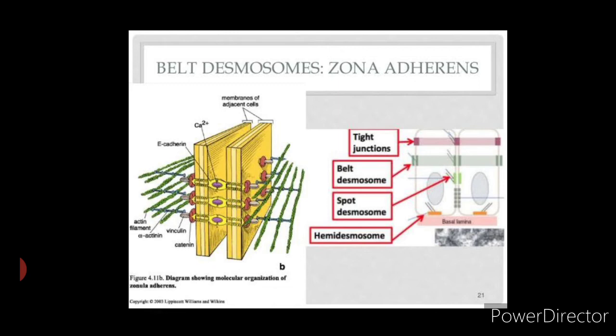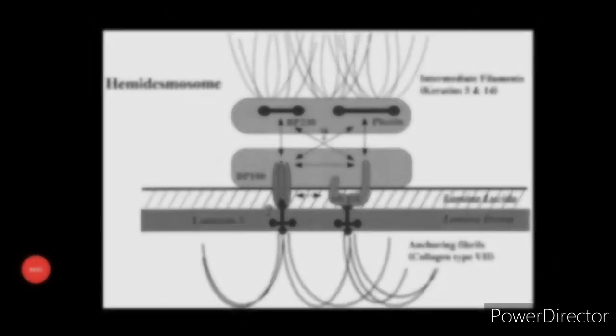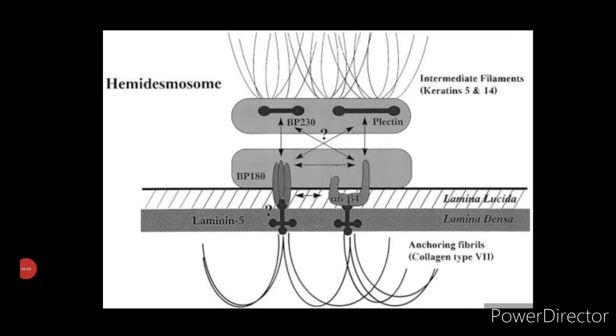Now let us understand hemidesmosomes. Hemidesmosomes are associated with the basal membrane of some epithelial cells. They are similar to desmosomes but are only half in structure. Hemidesmosomes consist of two proteinaceous plaques on the cytosolic face of the plasma membrane.